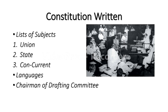The Constitution sought to balance competing claims by providing three lists of subjects: the Union List, the State List, and the Concurrent List. The Union List consists of taxes, defence, and foreign affairs. The State List consists of subjects such as health and education. The Concurrent List consists of subjects such as agriculture and forests, in which both governments share responsibilities.